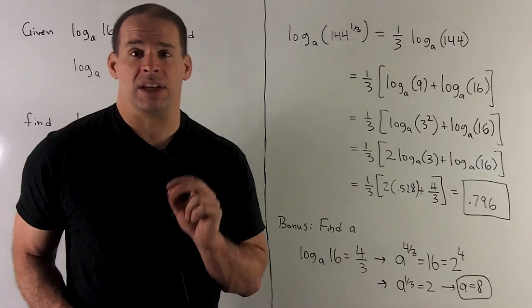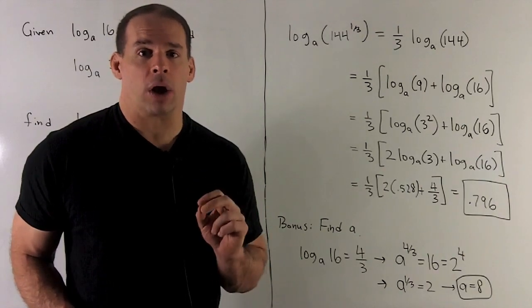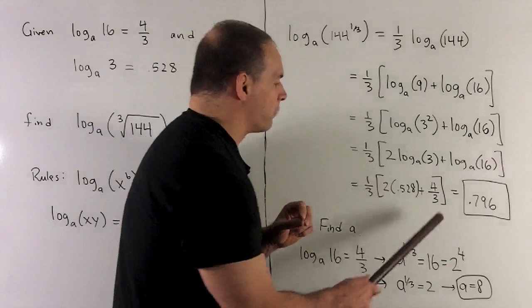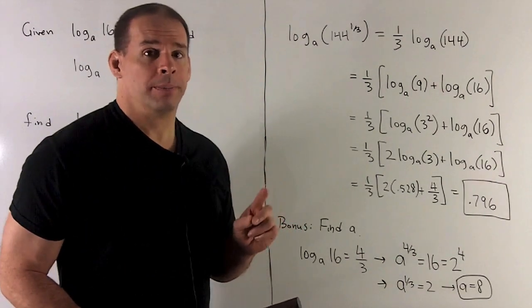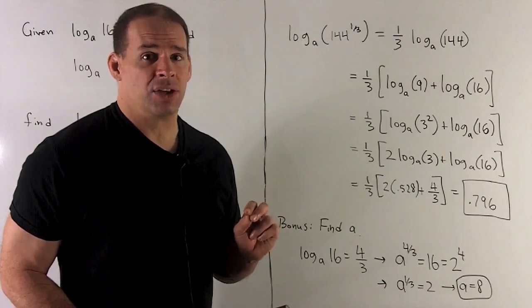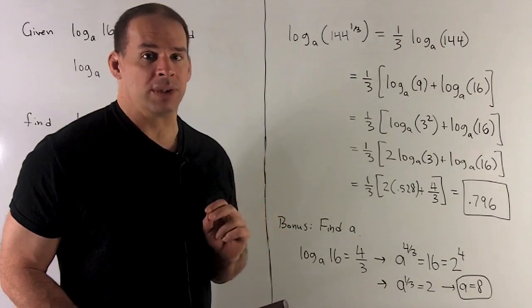Okay, 16 is equal to 2 to the 4th power. So I'll be able to cancel out the 4th powers here. So it's just going to be A to the 1 3rd equal to 2. And I can cube both sides, so I wind up getting A equal to 8.